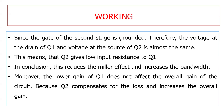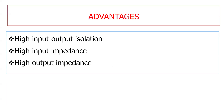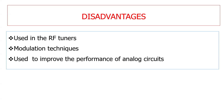We achieve bandwidth and gain without any loss. High input impedance is achieved because the first stage is a common source amplifier, which has high input impedance. High output impedance is achieved because the output side uses a common gate amplifier. We also achieve high input-output isolation since the drain output of the first stage and the source input of the second stage are directly coupled without any capacitor. This type of circuit is used in applications like RF tuners, modulation techniques, and to improve the performance of circuits.